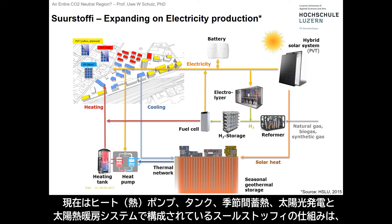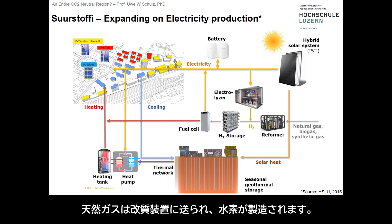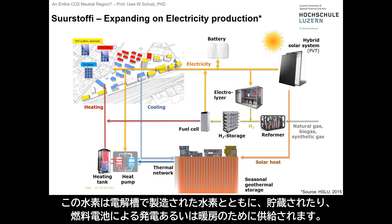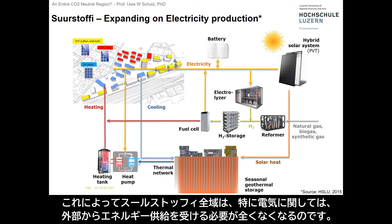In the future, the system of Zürstofi — currently consisting of heat pumps, tanks, seasonal thermal storage, and photovoltaic and heating systems — could be complemented with natural gas being fed into roof reformers, supported by electrolyzers to produce hydrogen, either initially for storage or directly running fuel cells, providing further electricity and heating to make the entire area of Zürstofi completely independent of other heat sources, particularly when it comes to electricity.